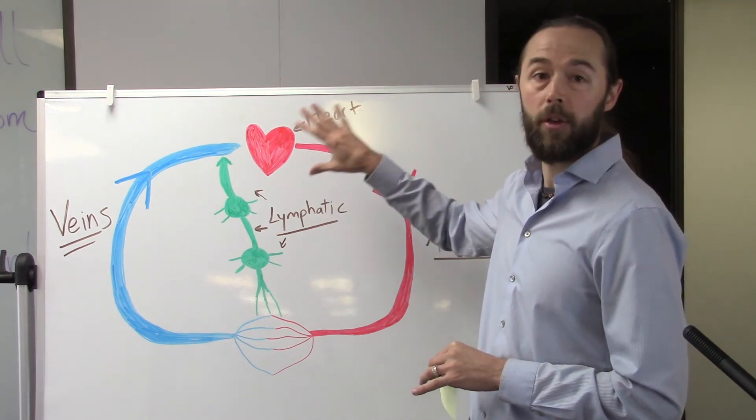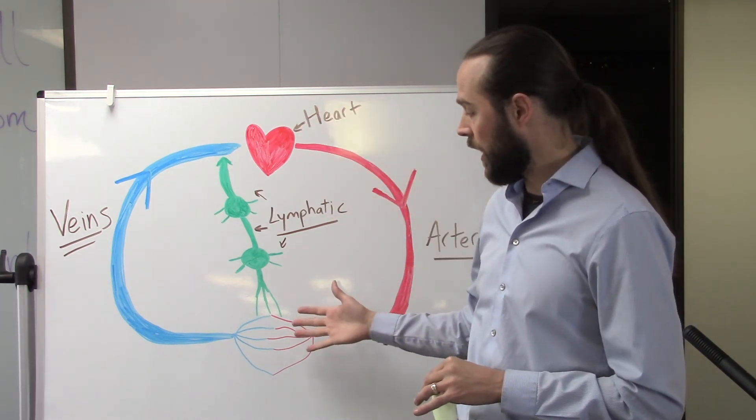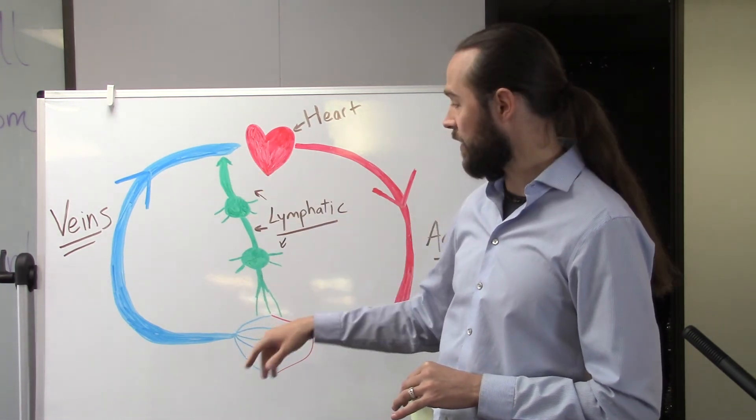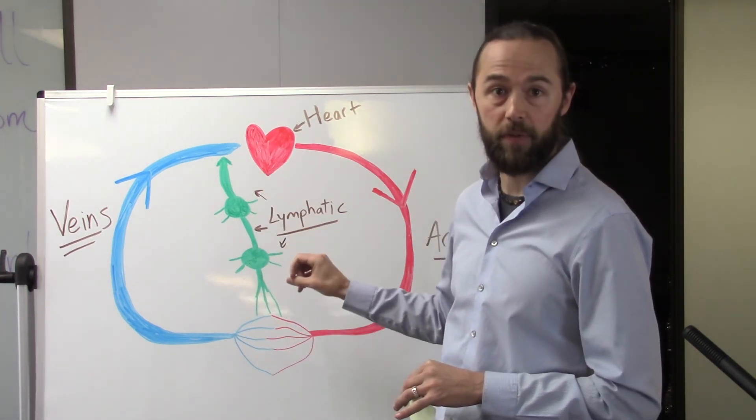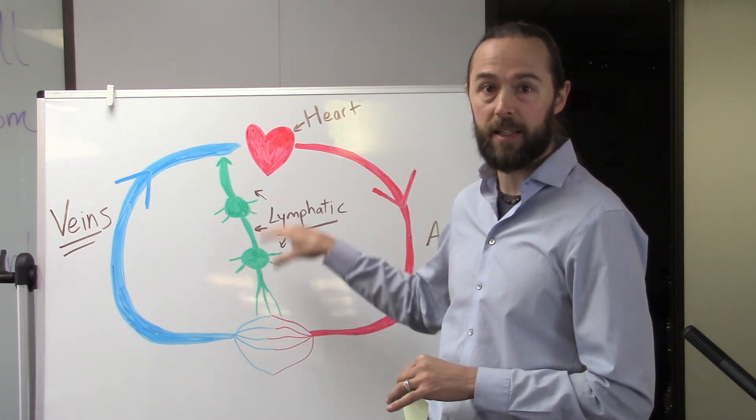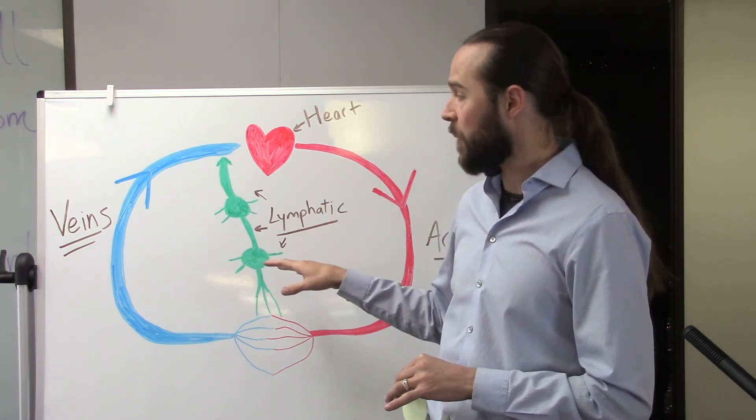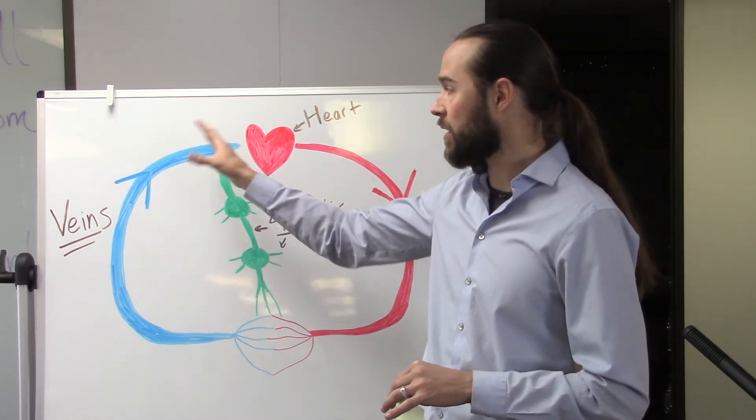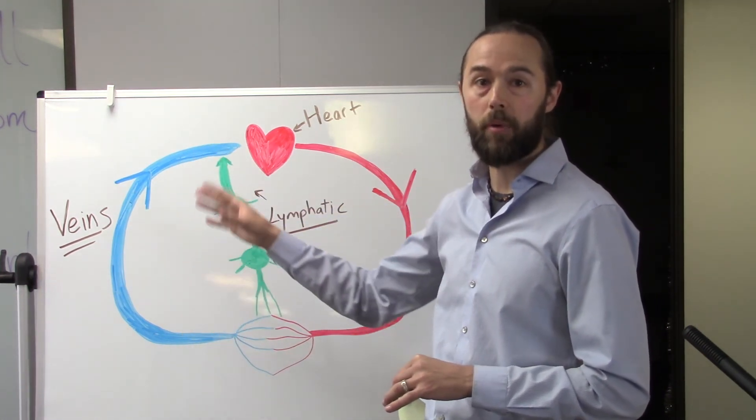Go back to the picture here. You've got the blood going from your heart through your arteries into your tissue, and then the majority of that blood is just picked up from your veins and goes back to your heart. Whereas the lymphatic system is picking up a portion of the blood fluid, the plasma that leaks out into the lymphatic system.